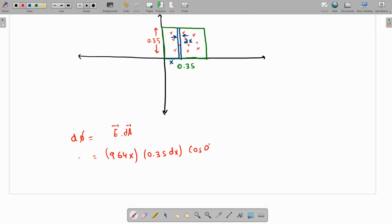So this is the elemental flux. For the total flux, let me rewrite this equation by eliminating cos 0. So D phi is going to be 964 times 0.35.